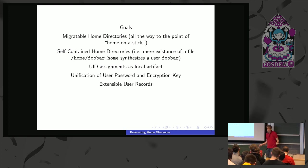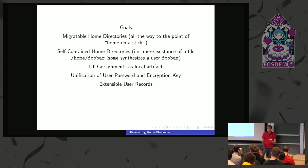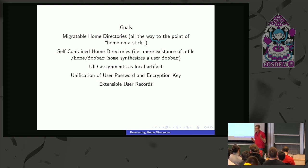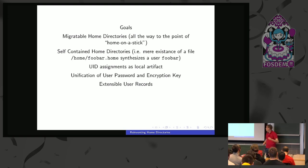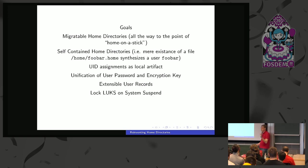Also, extensible user records. The sidecar databases are awful. Extensible user records mean that anyone can put anything in these user records — we don't have to have a fixed stone set of fields. The Samba people can put their stuff in there, the Kerberos people can put their stuff in there, and whoever wants to put more stuff can do so. It should be truly extensible and everybody can have their own fields.